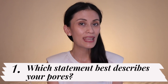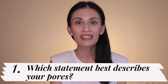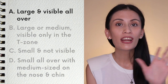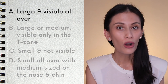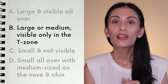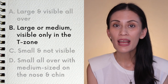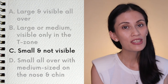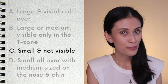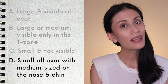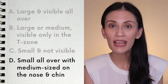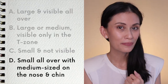Question number one: which of the following statements best describes your pores? Letter A, large and visible all over? Letter B, large to medium size and only visible on the T-zone? Letter C, small and not visible? Or letter D, small all over with some medium-sized ones on the nose and chin?